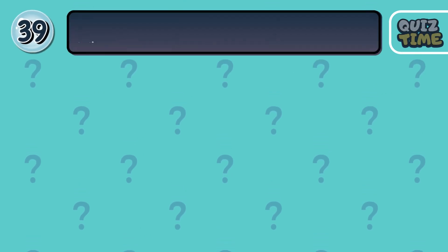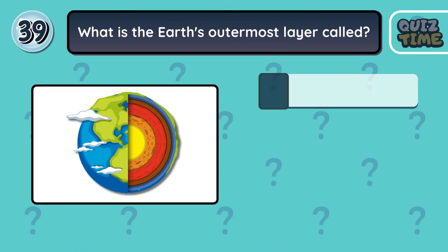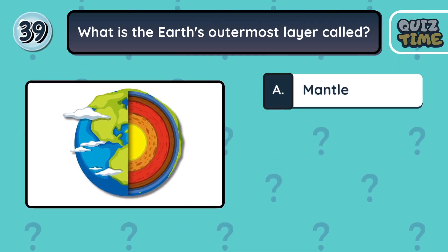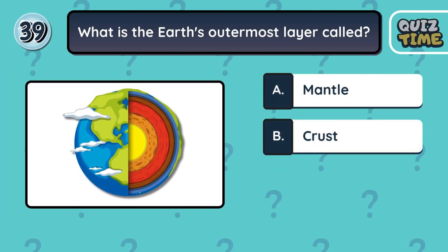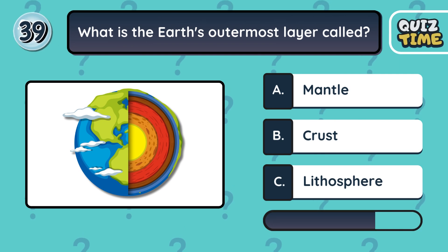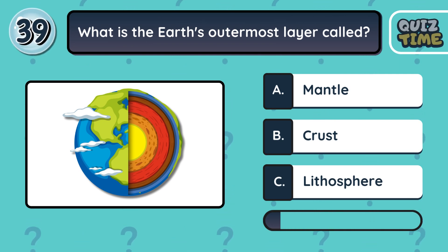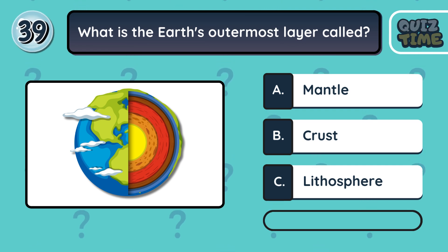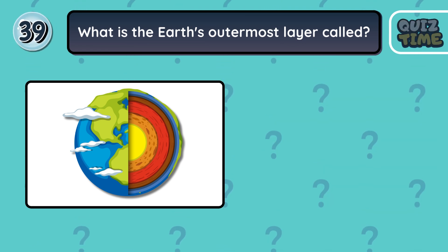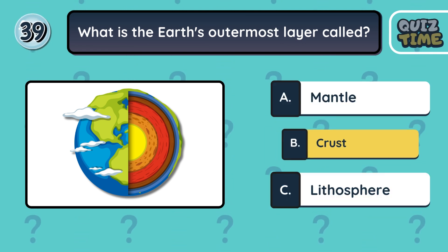Number 39. What is the Earth's outermost layer called? A. Mantle. B. Crust. C. Lithosphere. The correct answer is B. Crust.